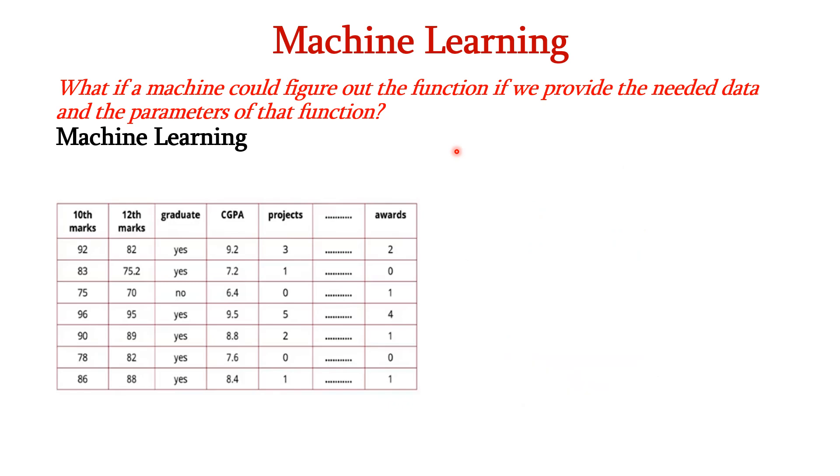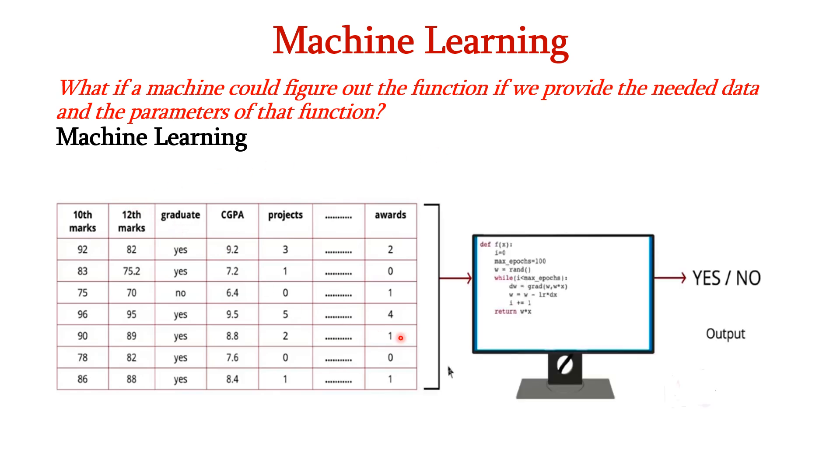Consider for example that a company is hiring some employees. It gathers the information about the candidates like 10th marks, 12th marks, graduate details, etc. and gives it to the machine. Based on this information, the machine figures out its own function and processes this information and gives the output whether the candidate has to be hired or not. So here we have y = f(x1, x2). x1 and x2 are the inputs, f is the function, y is the output. This function matches the relationship that exists between the input and the output.